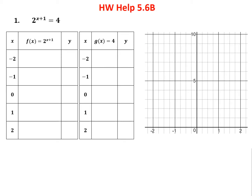Problem 1 asks us to solve the equation 2 to the x plus 1 equals 4. We're going to do that by graphing, which means we're going to split this into two equations. We're going to write the left side as y equals 2 to the x plus 1, and then we're going to have the right side written as y equals 4, and we're going to solve each of those and graph them.